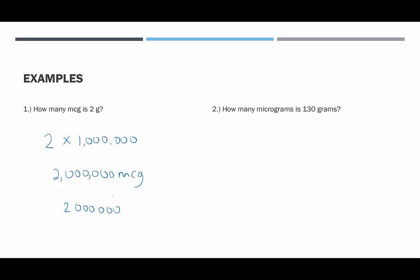How many micrograms is 130 grams? We're taking 130 and multiplying it by one million. Multiplying by one million means moving the decimal point six places to the right — one, two, three, four, five, and six — adding in six zeros. Or you might know that 130 times one million is 130 million. So we would have 130 million micrograms. When entering this into the computer, forego the commas and be very careful to add those seven zeros.